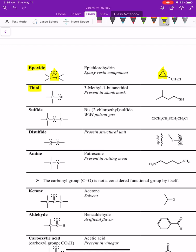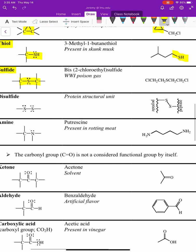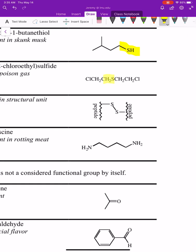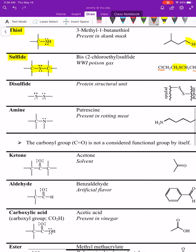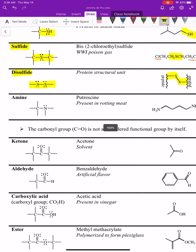A thiol is like an alcohol, but instead of oxygen you have sulfur — since sulfur is directly below oxygen on the periodic table, it bonds the same way. A thiol is a carbon connected to SH. A sulfide is like an ether but with sulfur instead of oxygen: C-S-C. A disulfide, which is important in proteins, is when you have C-S-S-C.